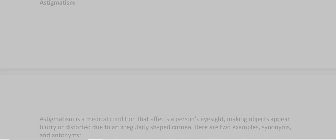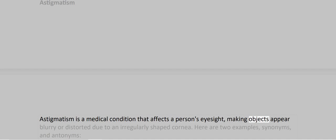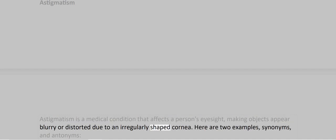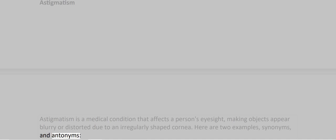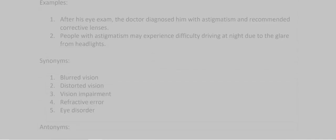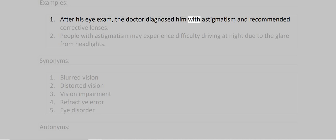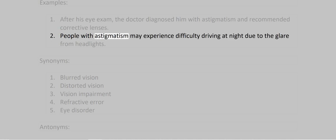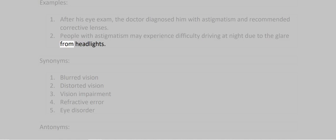Astigmatism. Astigmatism is a medical condition that affects a person's eyesight, making objects appear blurry or distorted due to an irregularly shaped cornea. Examples: 1. After his eye exam, the doctor diagnosed him with astigmatism and recommended corrective lenses. 2. People with astigmatism may experience difficulty driving at night due to the glare from headlights.